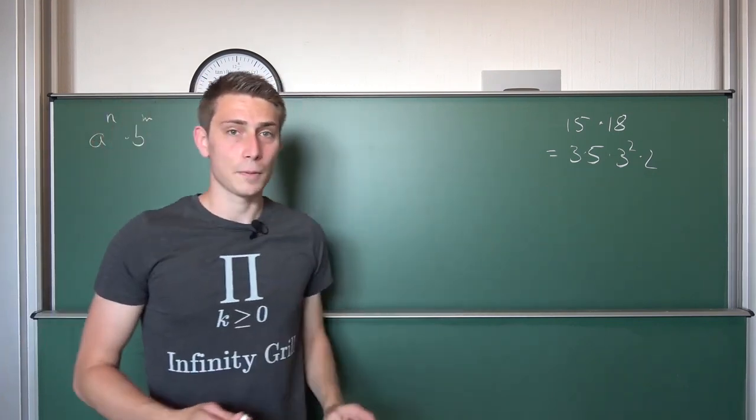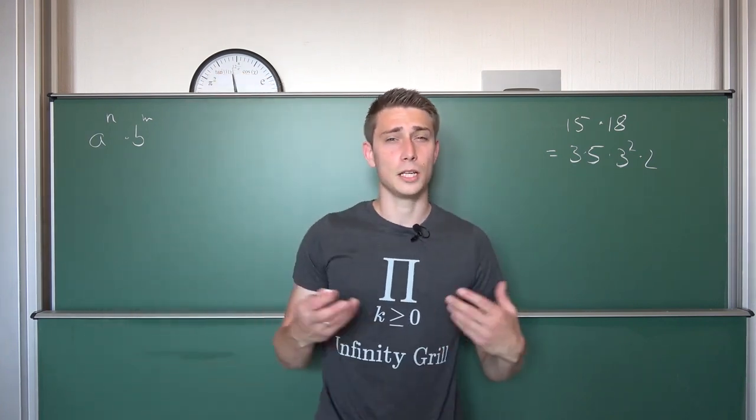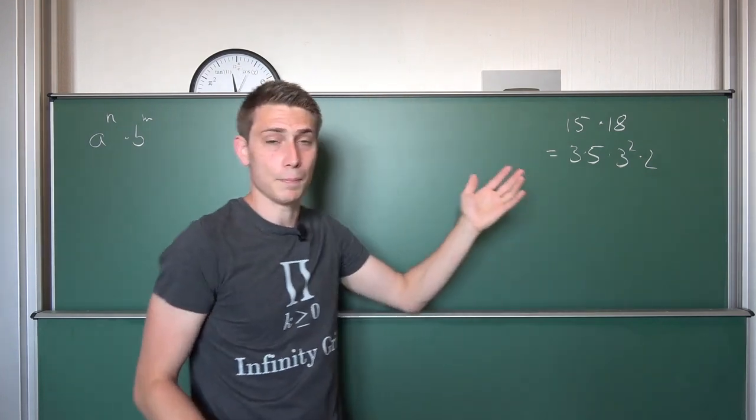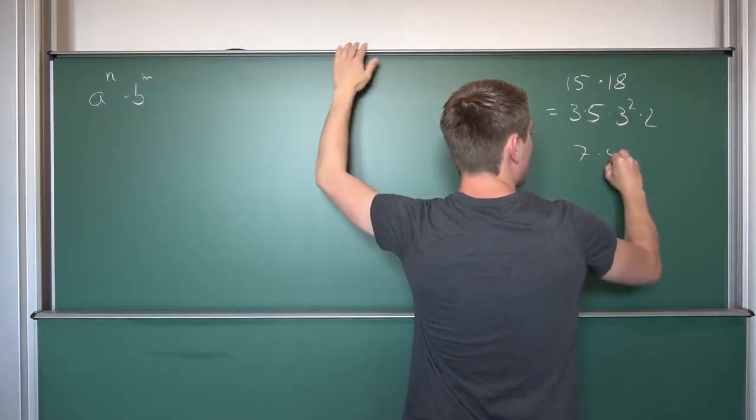This is what we did. But a subscriber asked in the comments a very interesting question. What is going to happen if we have prime number bases? For example, 7 times 5.